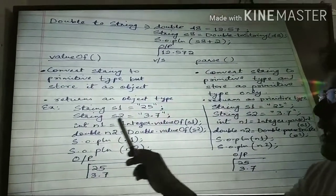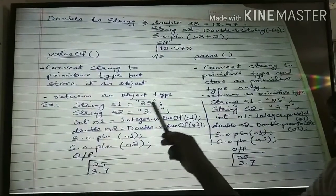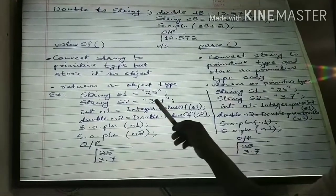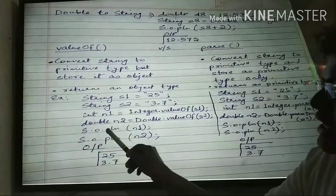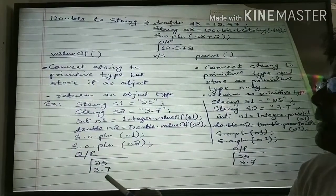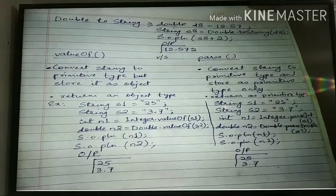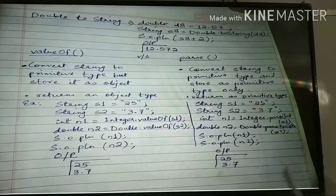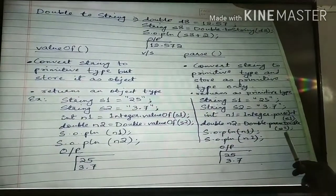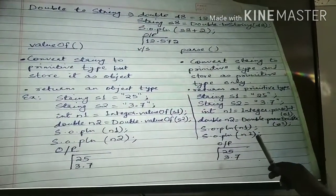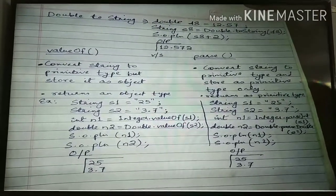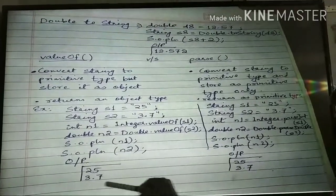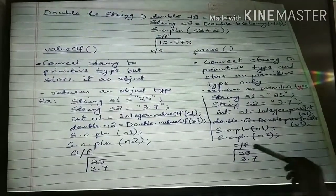For example: String s1 = "25", String s2 = "3.7". int n1 = Integer.valueOf(s1) — the value 25 is stored, and double n2 = Double.valueOf(s2) — storing 3.7. They appear as int and double type, but internally they are stored as object type. In contrast, using Integer.parseInt(s1) and Double.parseDouble(s2), the values 25 and 3.7 are stored as primitive types. The difference is only in how they are stored internally — object type versus primitive type.